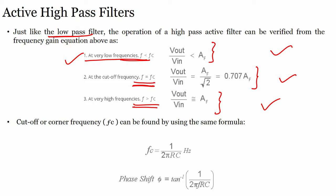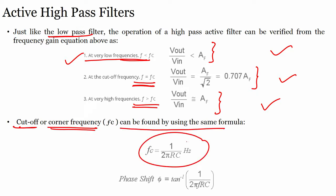The cutoff or corner frequency FC is found using FC = 1 / (2πRC), same as before. The phase shift is given by φ = arctan(1 / (2πRC)). Remember: at F < FC the gain is below AF; at F = FC the gain is 0.707·AF; at F > FC the gain equals AF.